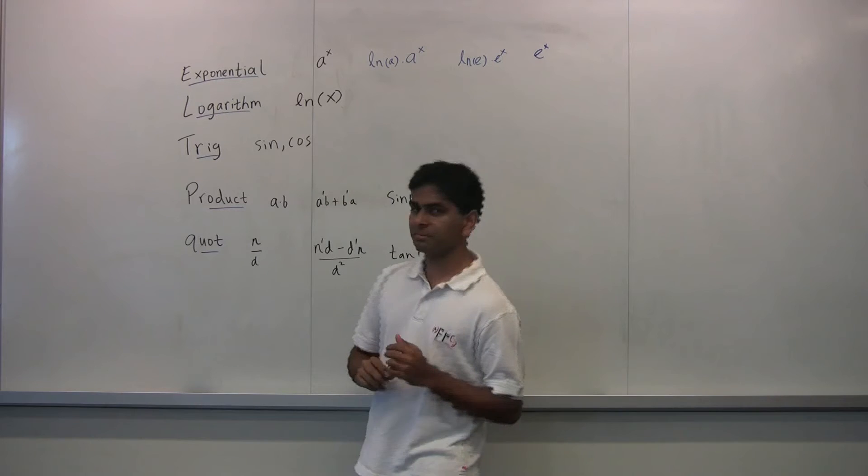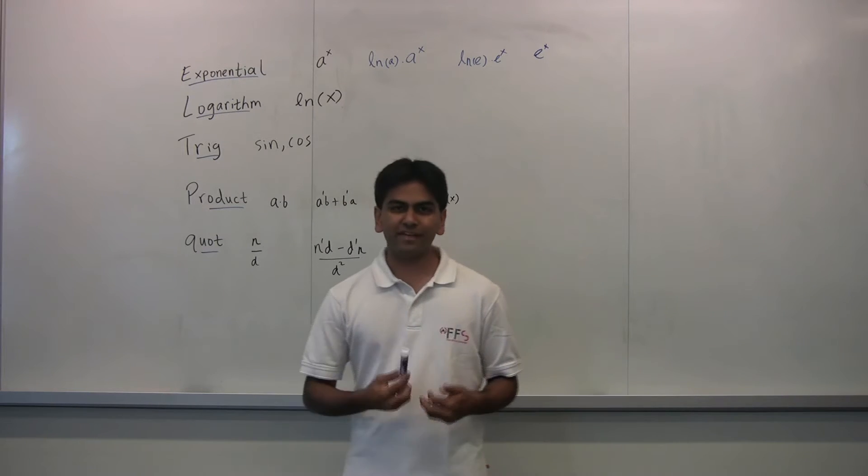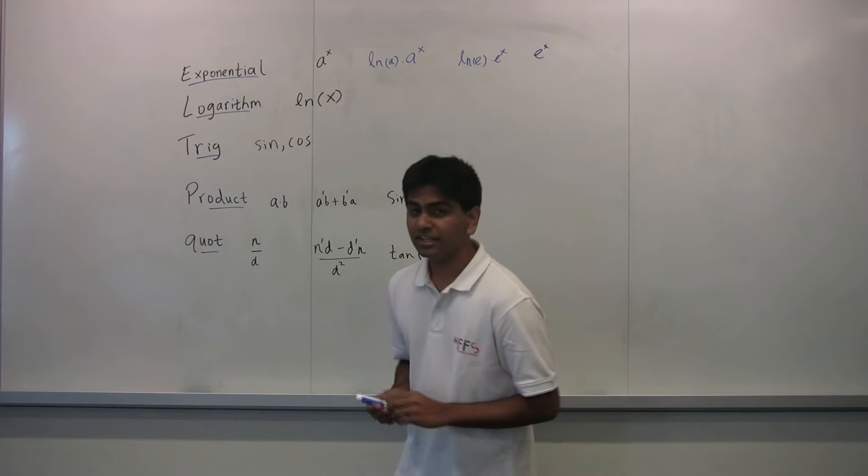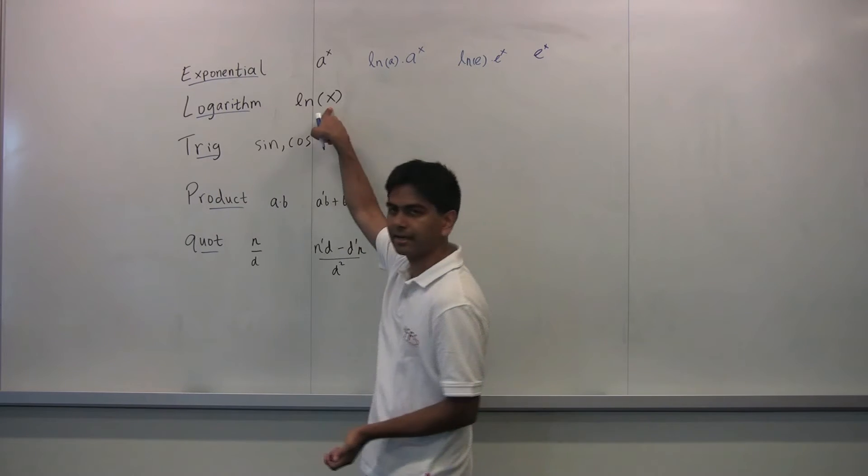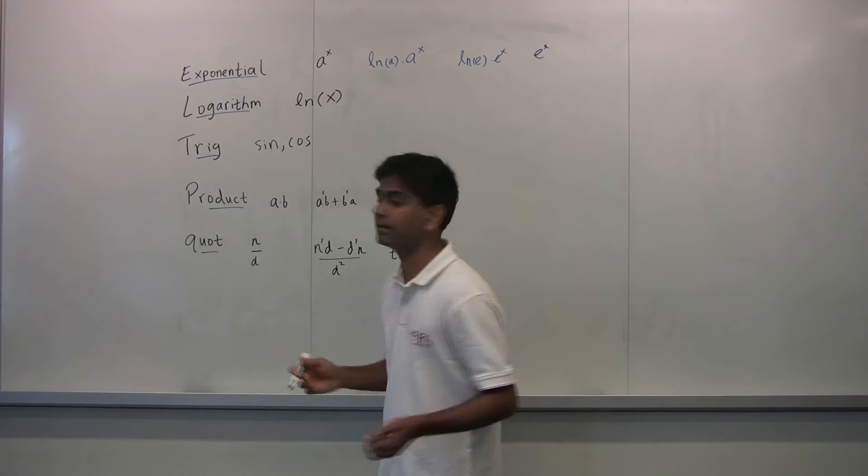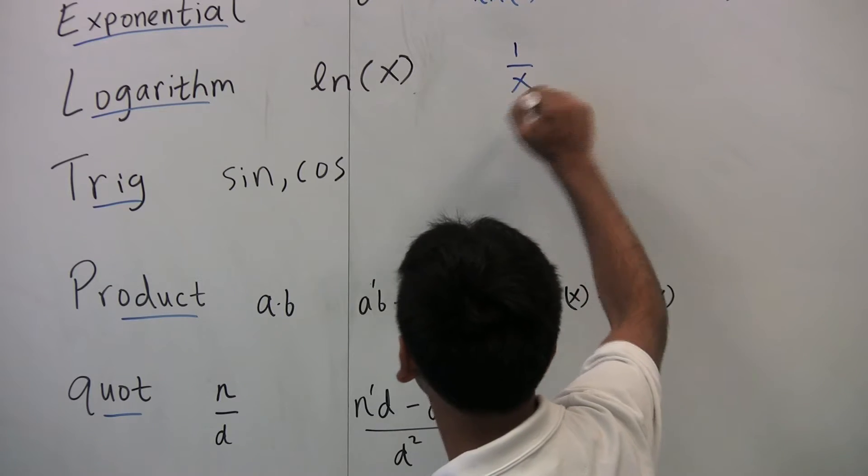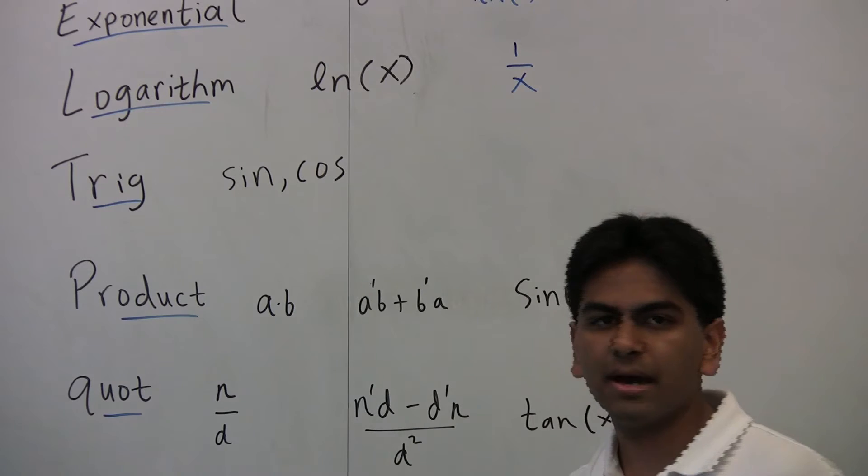Now, looking at logarithmic functions, what's the derivative of ln of x? Well, the derivative of ln of anything is just the derivative of what's in there divided by what's in there. So the derivative of this is just 1 over x because the derivative of x is 1, and then at the bottom you just write x.